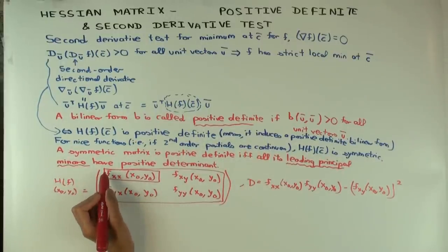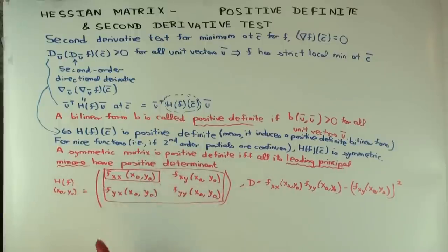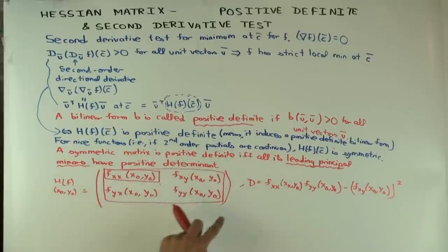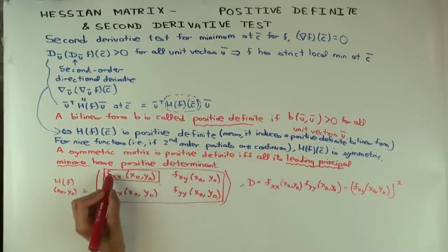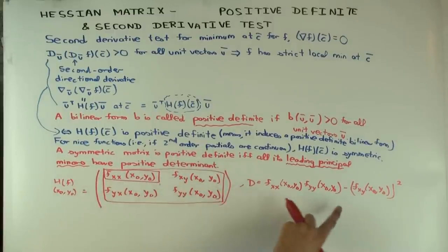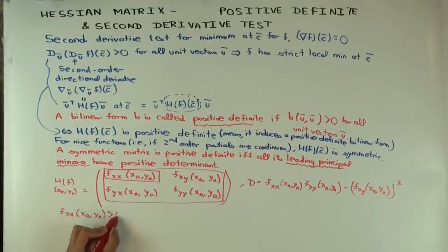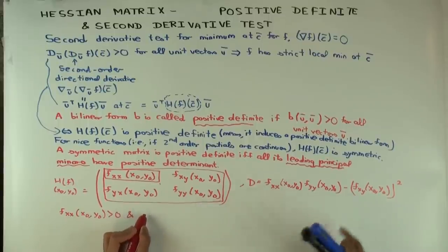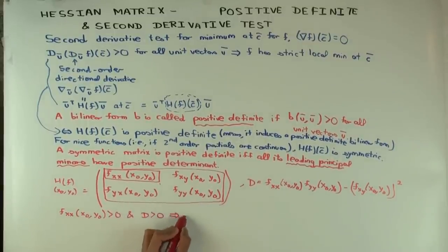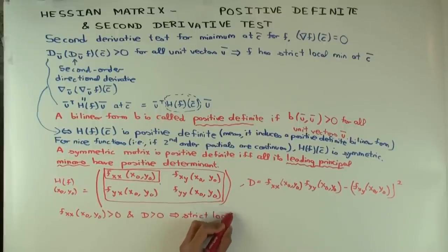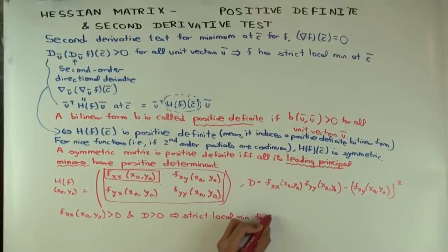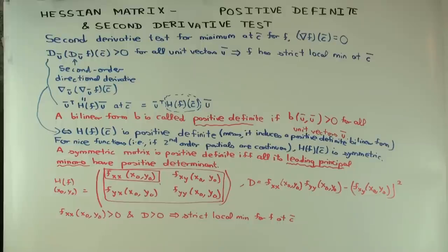There are just two leading principal minors for the 2×2 Hessian. The condition we get is: fxx is positive and D (the determinant fxx·fyy − fxy²) is positive, which implies a strict local minimum. That is essentially the reason the second derivative test for two-variable functions works.